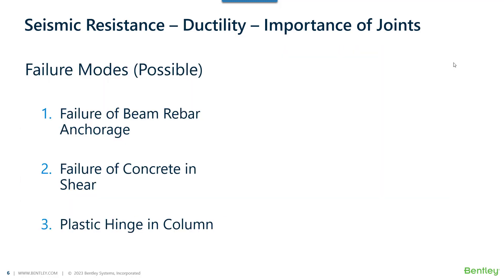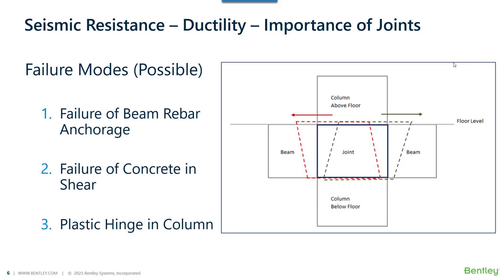So what are the possible modes of joint failure? The first is failure of the beam bar anchorage. Earthquake is a lateral load — a shaking or vibratory load — so the structure moves left and right. At a given joint, there is always a condition where the structure is moving either left or right, as shown by the red and green arrows indicating that left-right direction.